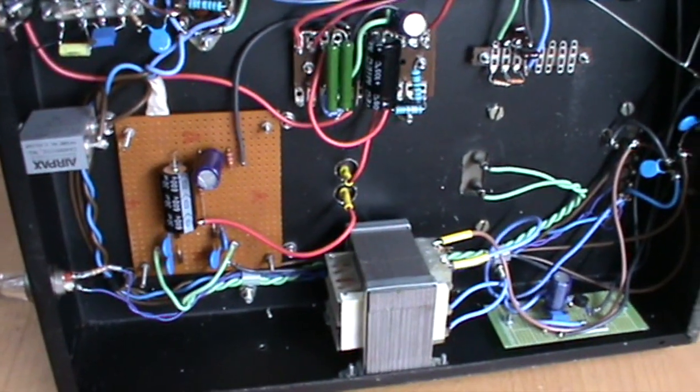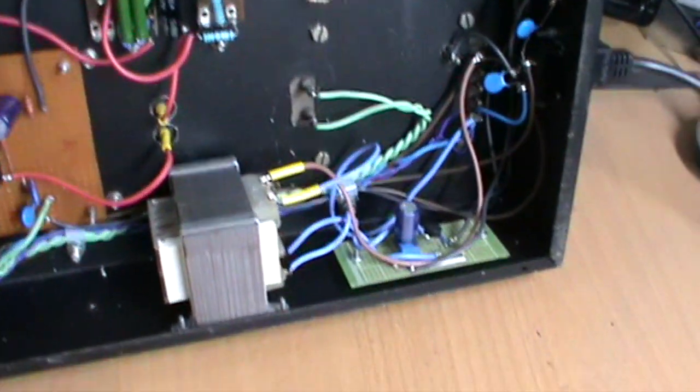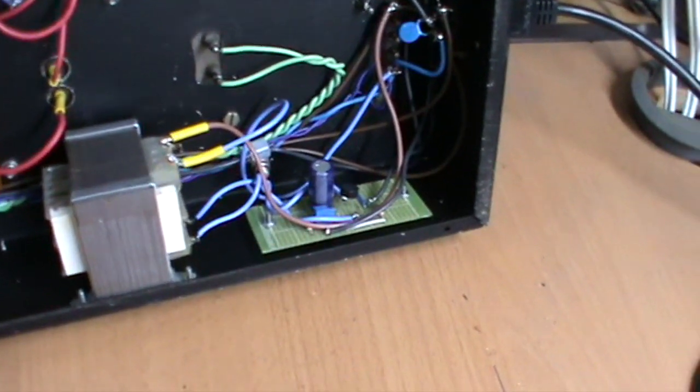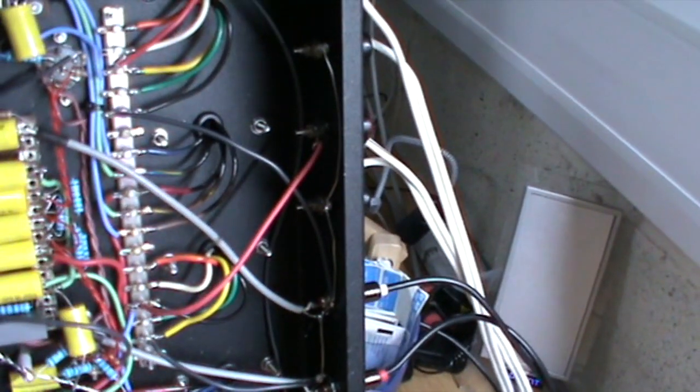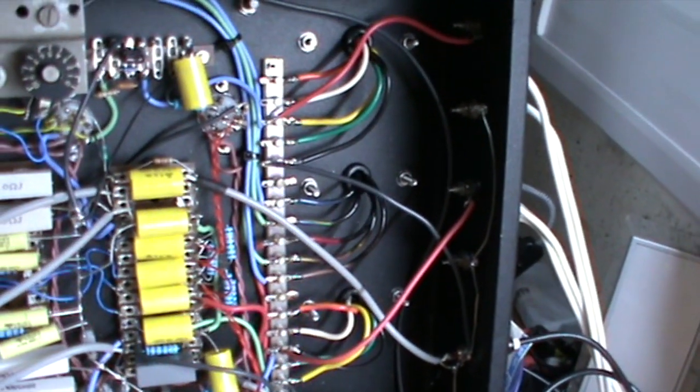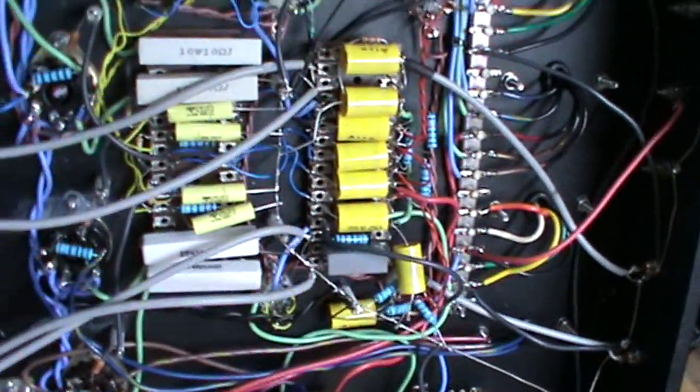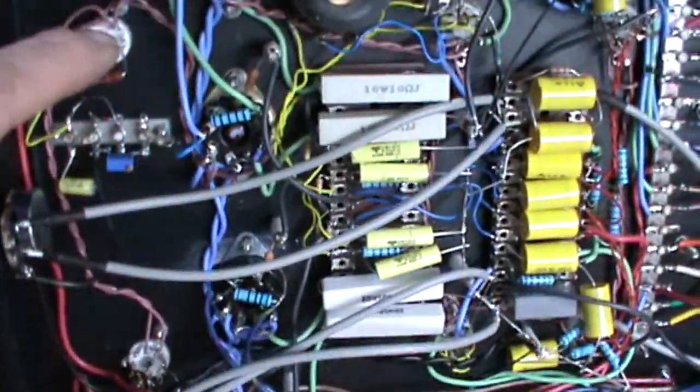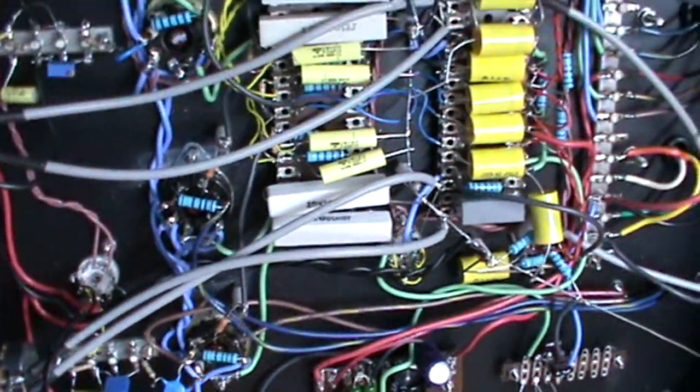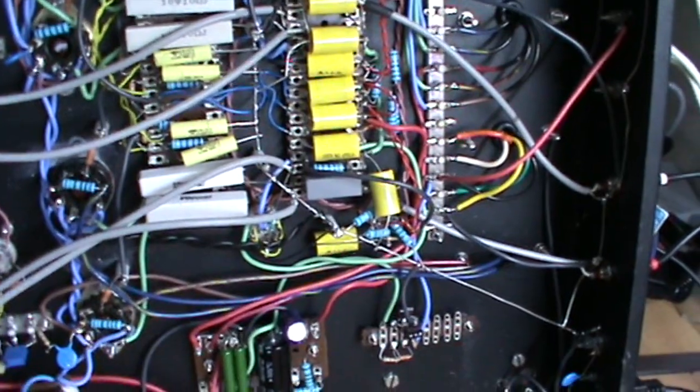Down at the bottom we've got a diode bridge for the HT, a couple of capacitors in series wired to the choke. The transformer over there is for the negative bias for the output valves. Standard poly caps used throughout. On this side we've got the EM81 circuitry for the VU meters.